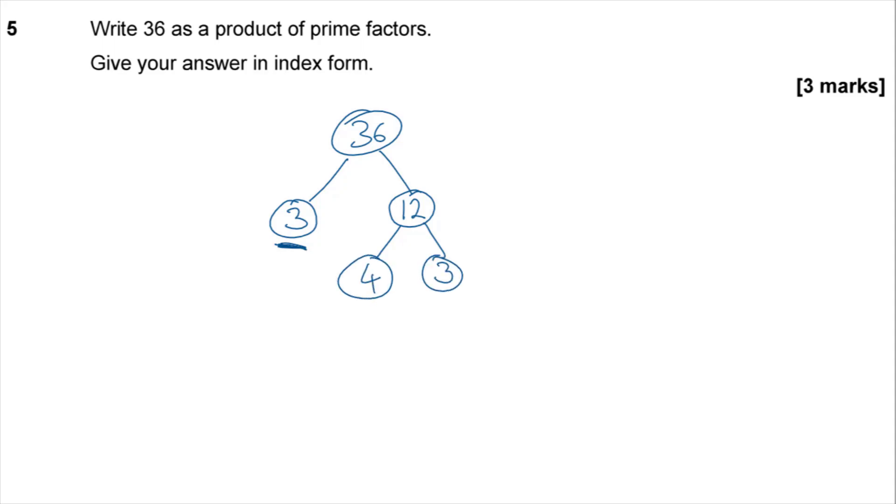Again, 3 is prime, so that's a stopping number, but 4 isn't. I can break that down into 2 and 2, which are both primes. So, looking at all of our terminating branches, multiplying those together will give us our original number. So, 2 times 2 times 3 times 3 is going to be equal to 36. Always worth double checking these. 2 times 2 is 4, times 3 is 12, times 3 is 36.